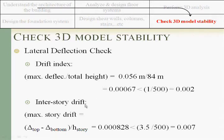We have checked the interstory drift, which is the maximum deformation at the top of the story minus the deformation of the bottom of the story divided by the height of the story. You can get this value, which is 0.00082, and it is less than the interstory limit, which is the height over 500.